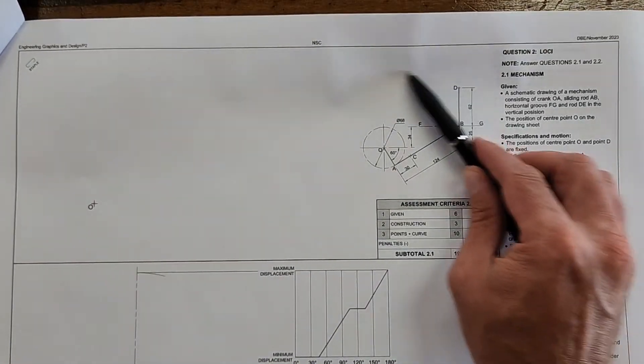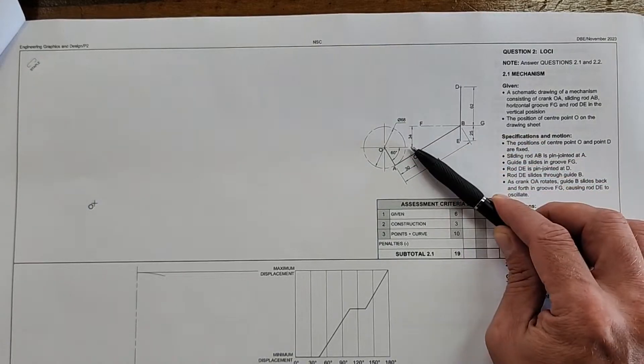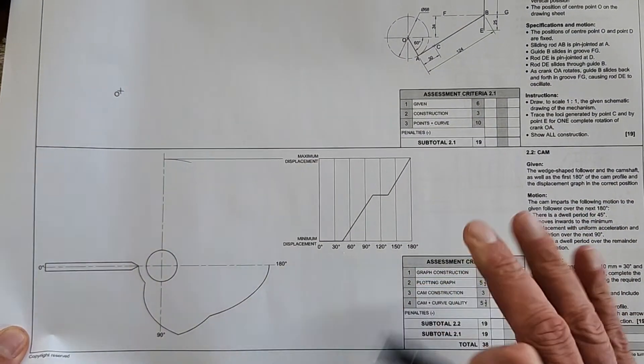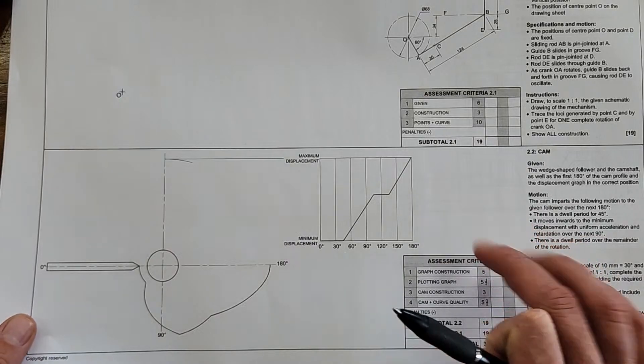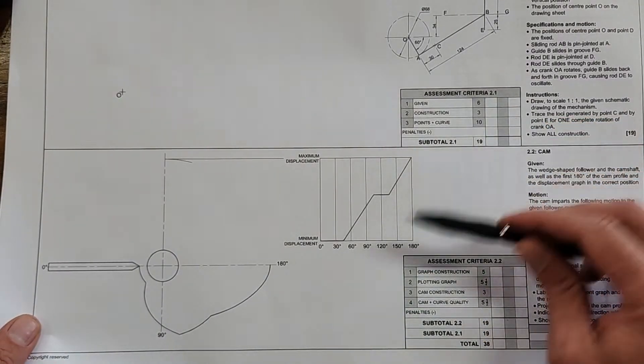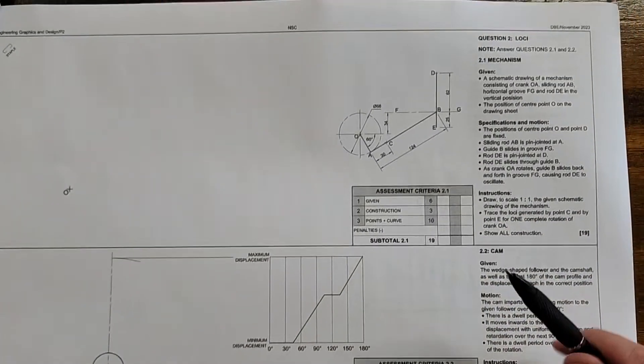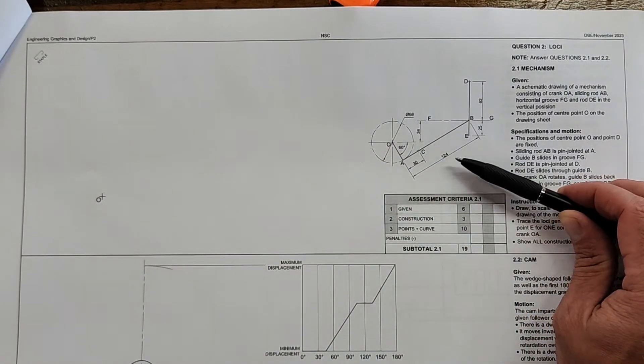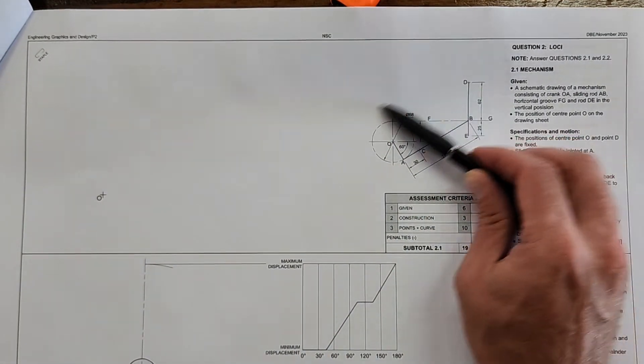Now the second question, and this is very clear in the ATP, that this question can be a loci of a mechanism and/or a loci of a cam. And that's exactly what they did in this paper. They actually gave both of them and it's been this way for the past few years. So you can very much expect that you're going to have a loci of a mechanism.